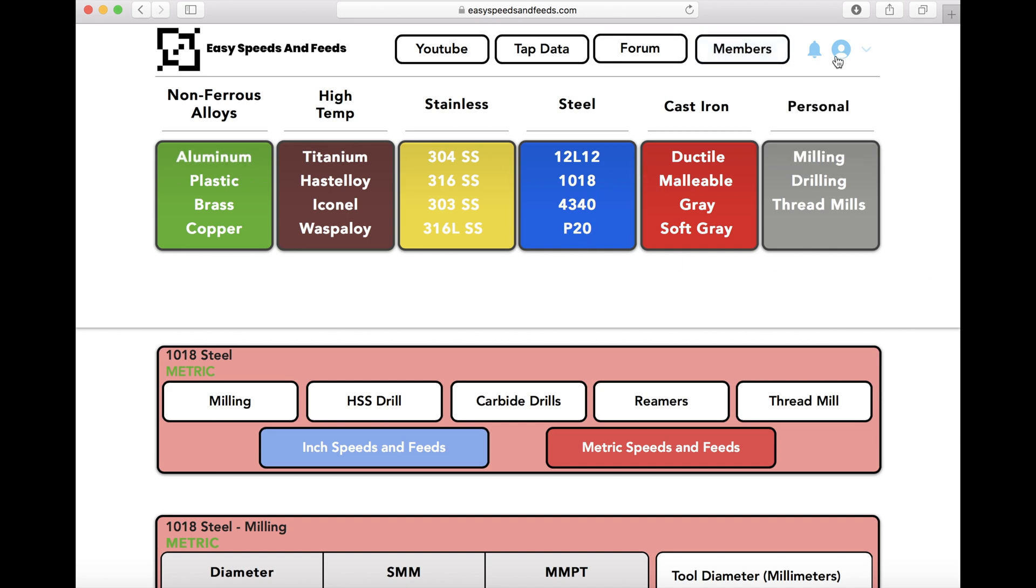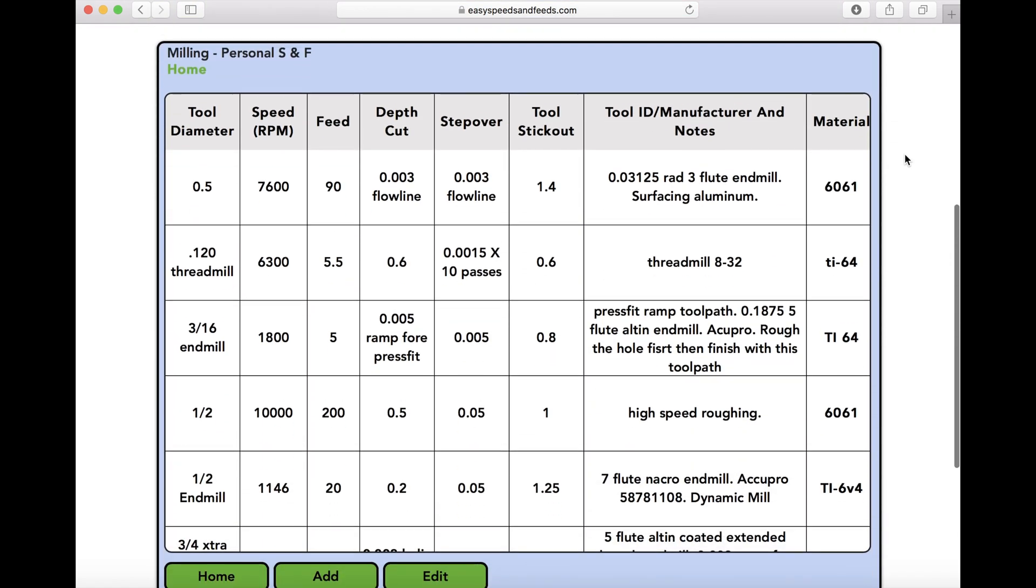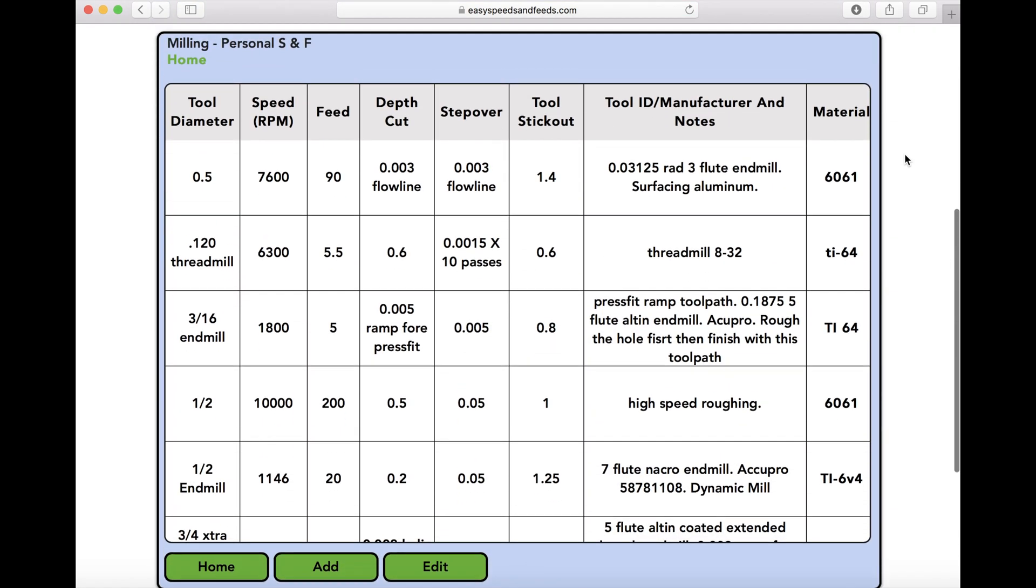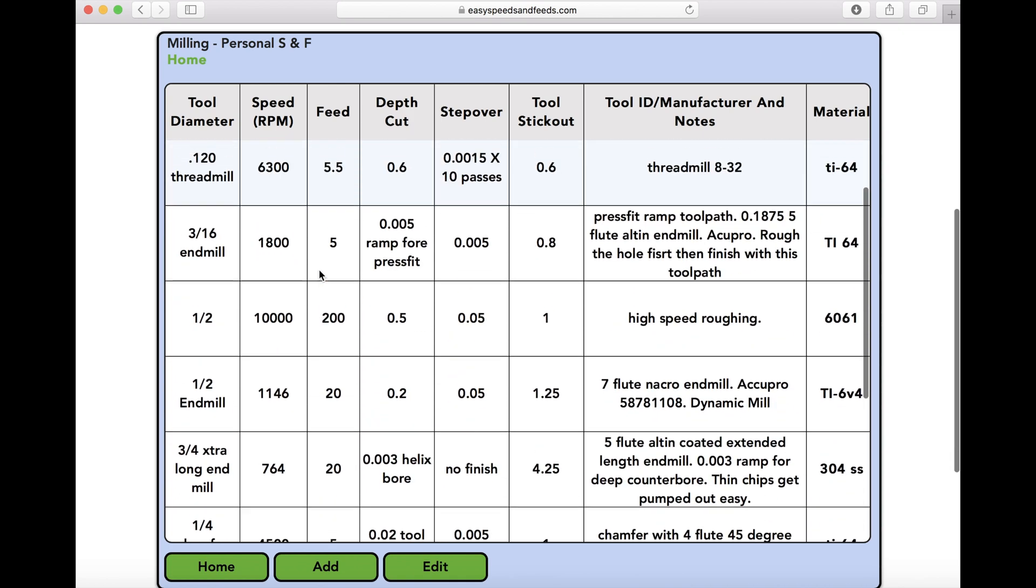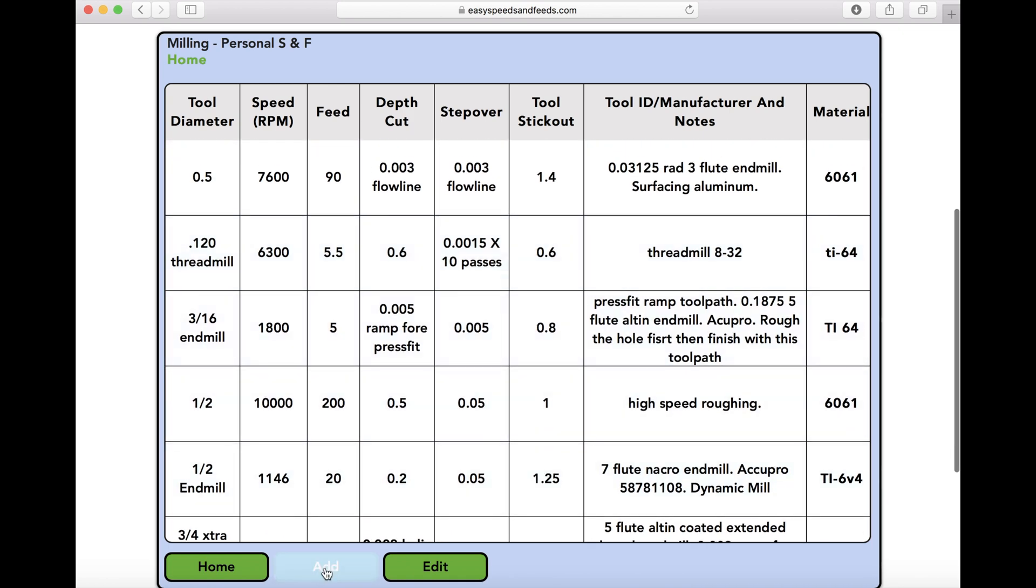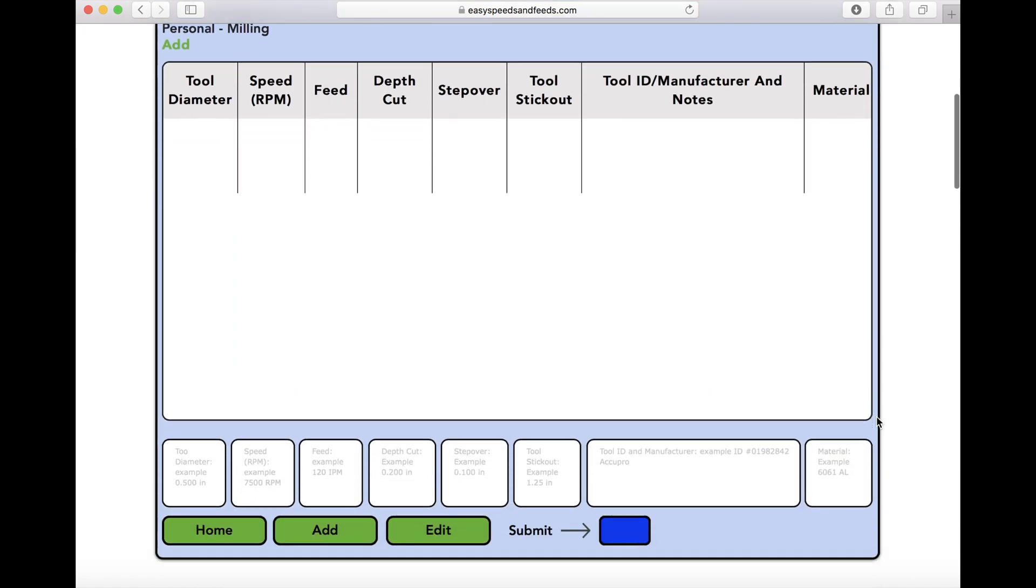Calculating your speeds and feeds takes time, so if you log into our website you'll be given free databases where you can add your own speeds and feeds. For milling - anything that's a milling tool, end mills, inserted cutters, stuff like that - you can add data. If you click on the add button, which is green below, you can scroll down and add in your speeds and feeds that have already been proven out. You can type in diameter of your tool.